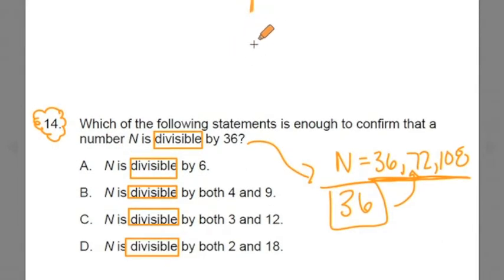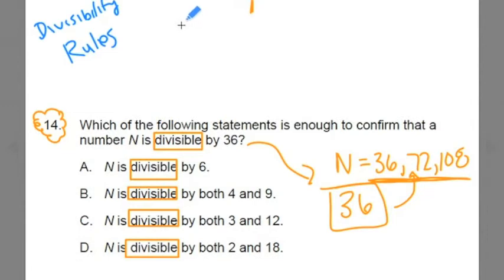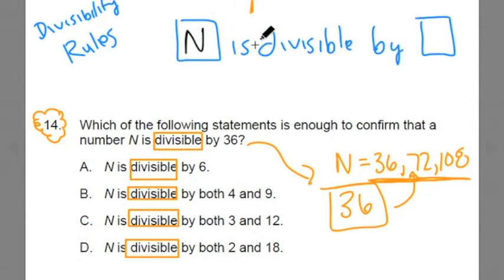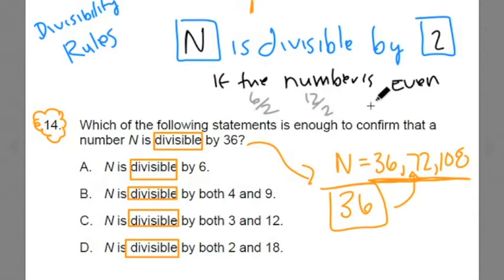This is reinforcing the idea, but it's not really a rule that will tell us the answer here. We're trying to come up with a divisibility rule for 36. Wouldn't it be great if we knew the divisibility rule for 36? Let's talk about the divisibility rules a little bit. A number is divisible by 2 if the number N is even. Like 6 can be divided by 2, 12 can divide by 2, 10 can be divided by 2 because 6, 12, and 10 are even. That's the divisibility rule of 2.